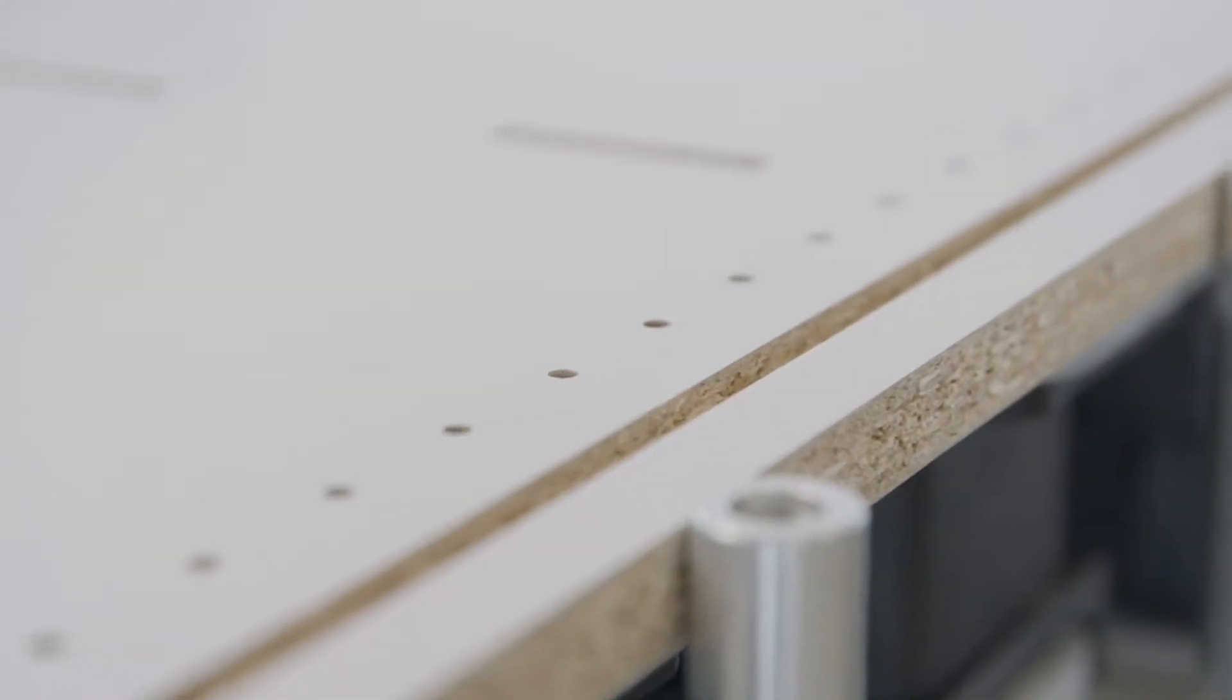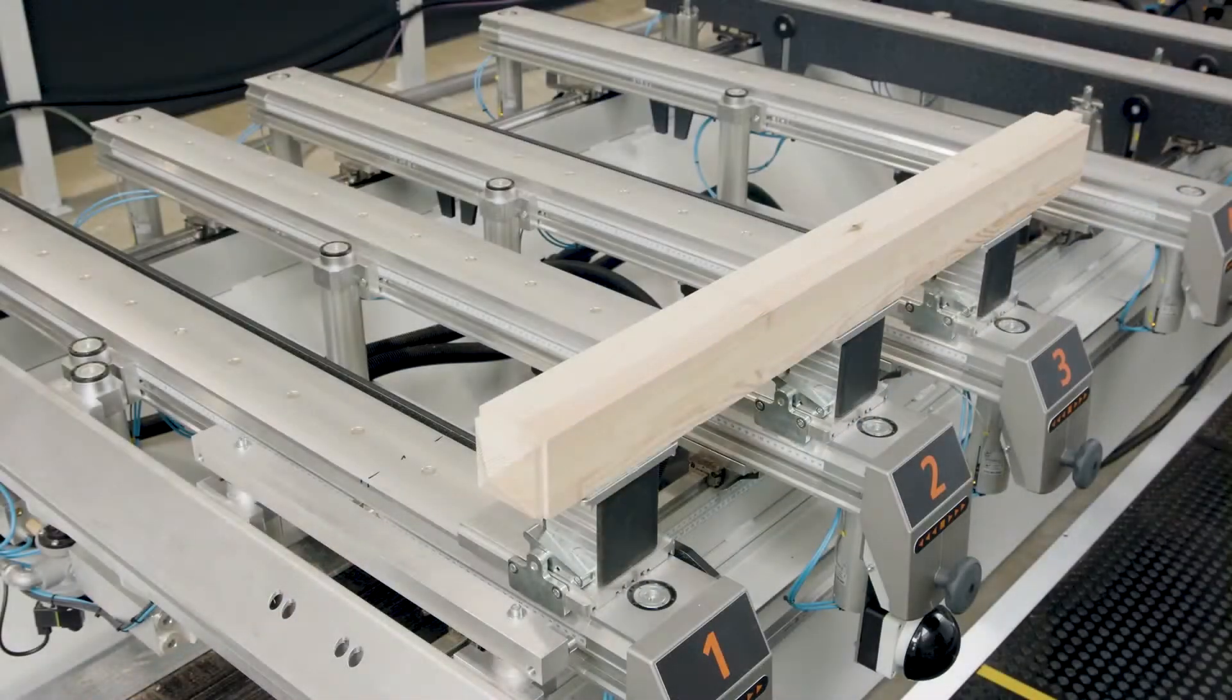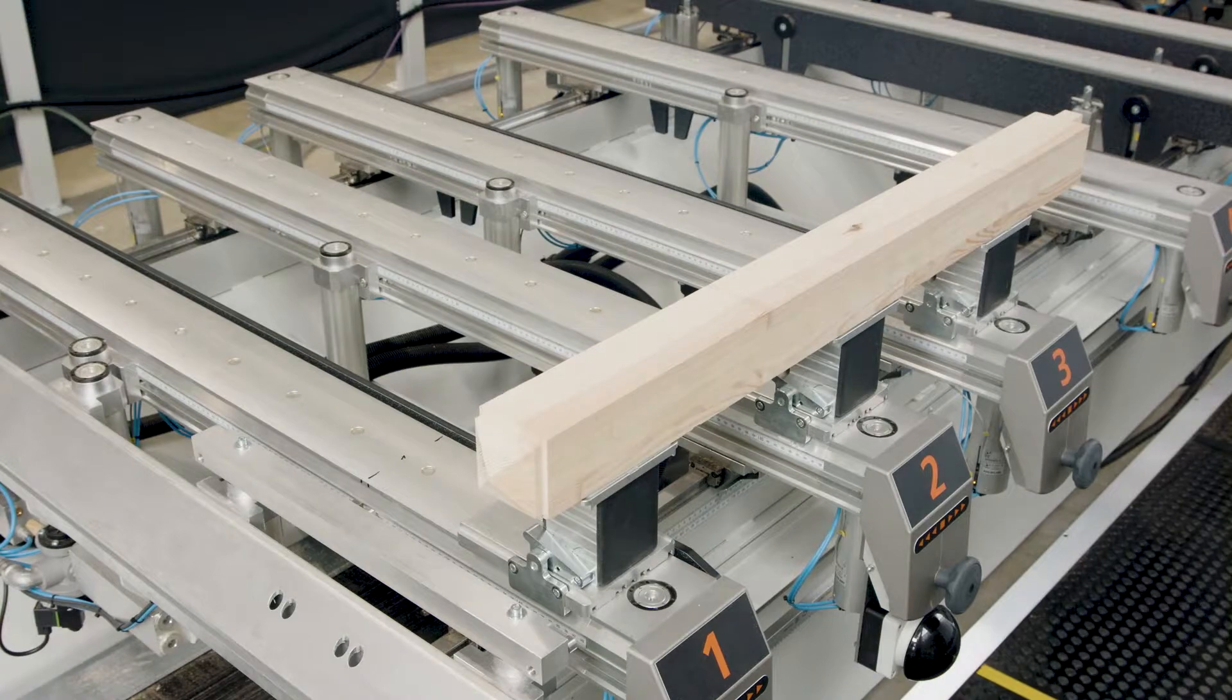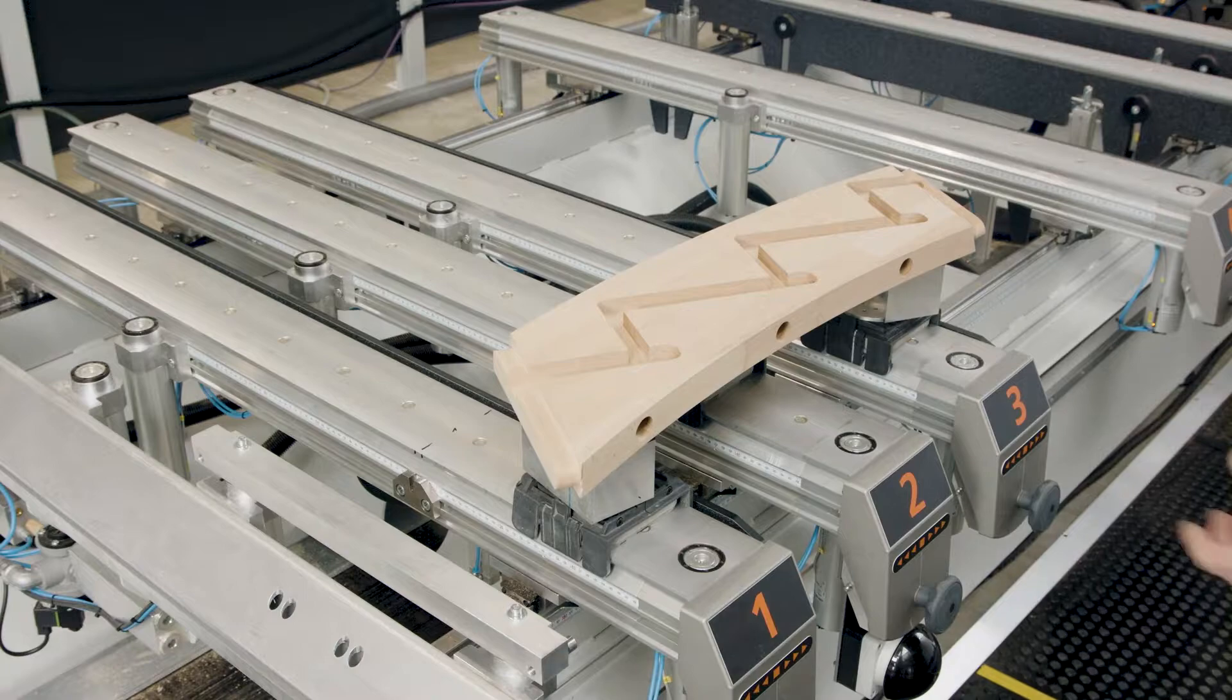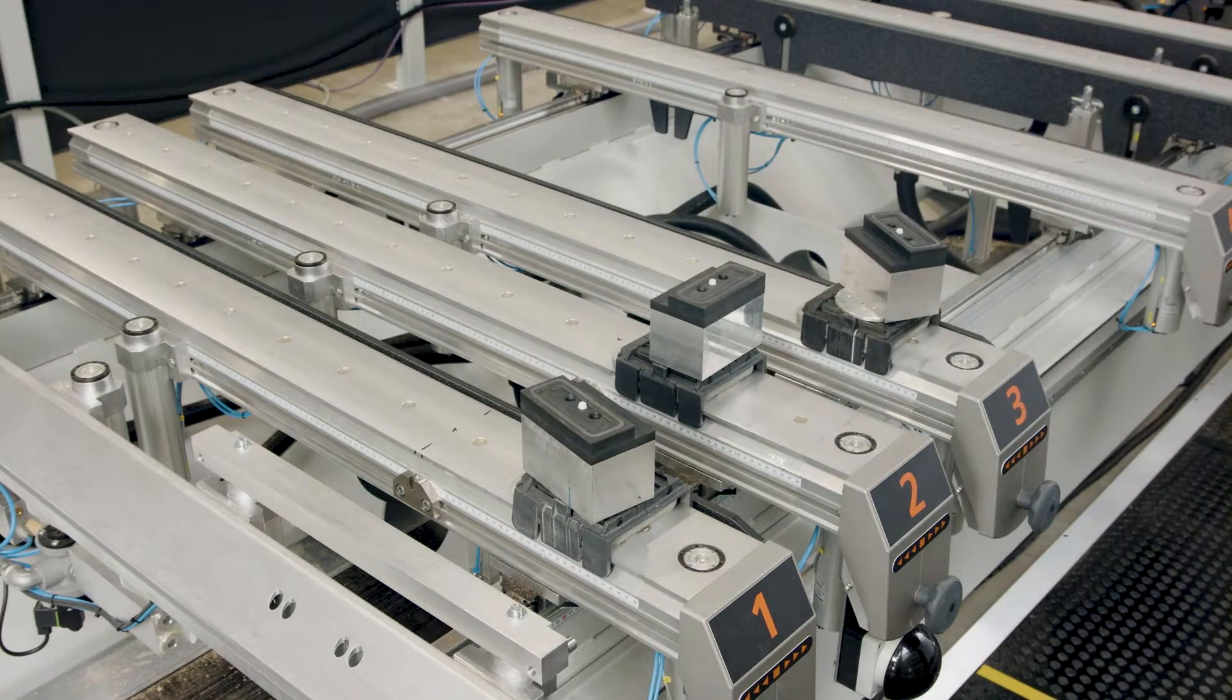Regardless of whether you are working with panel materials or solid wood, practical vacuum suction cups and variable frame clamps adapt the console table perfectly to a wide variety of machining operations.